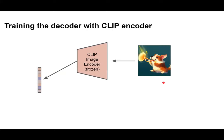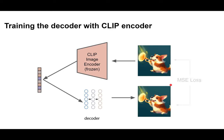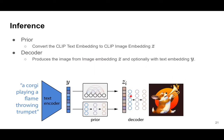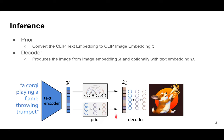Training the decoder is also straightforward. We don't need the text encoder — all we need is the image encoder. We have an image, encode it to image embedding, then use the decoder to decode it back, and calculate the MSE loss between the original and reconstructed image. During inference: for example, given a text like 'a corgi playing a flamethrower,' you first use the CLIP encoder to encode it into a CLIP text embedding, then use the prior to convert it to a CLIP image embedding, and finally use the decoder to decode it into the image. That is basically how DALL-E 2 / unCLIP generates images.